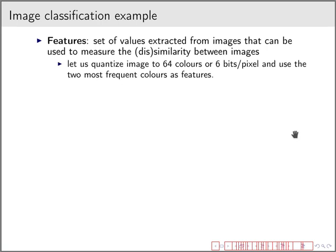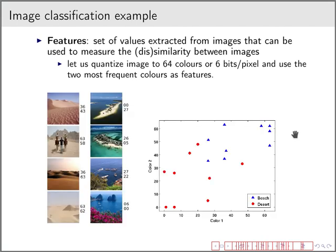We talked about in previous lectures about color and texture descriptors, for example. In here, I'm going to show this simple example. So let us just take the image, quantize it to 64 colors, distinct colors. That means we are using only 6 bits per pixel. And then use the two most frequent colors as features. So basically we are computing the histogram and then taking the index of the two most frequent colors in that image and using that as a descriptor.